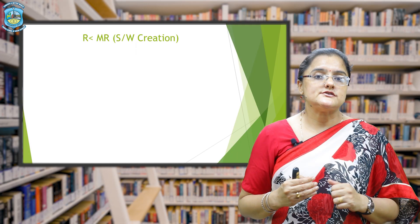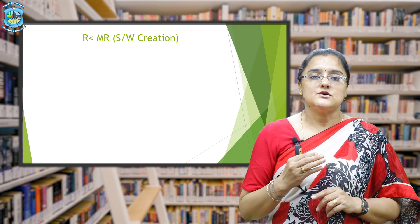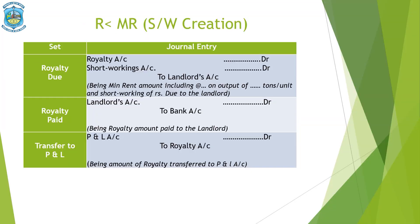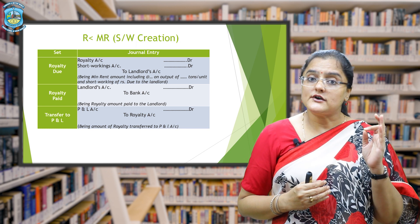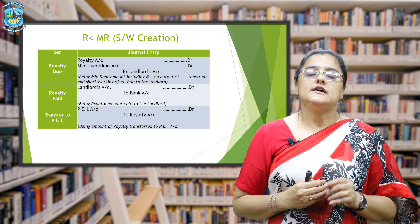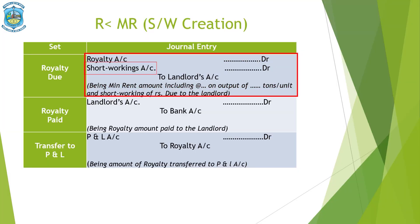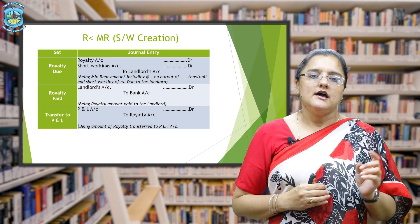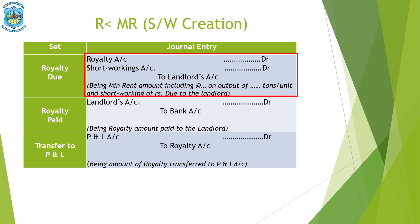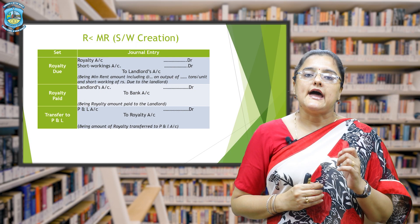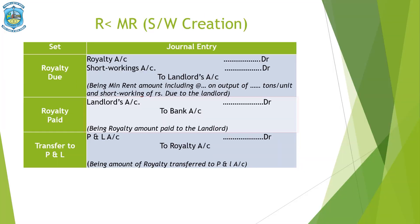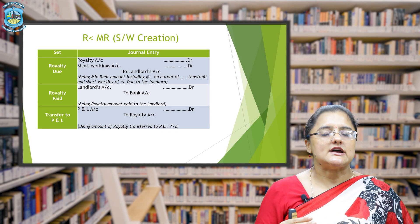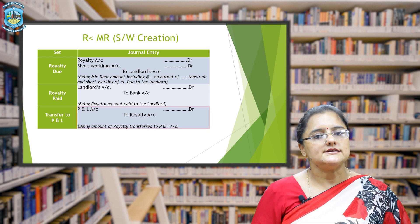In situation two, when royalty is less than minimum rent, short working is created. The royalty due entry changes: royalties account debit, short workings account debit, to landlord's account. The landlord's account is always credited with the higher of minimum rent or royalty. The second entry — landlord's account debit to bank — and the third transfer entry — P&L account debit to royalties account — remain the same.